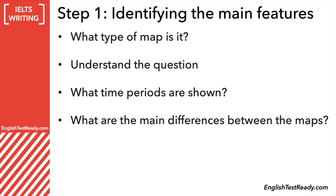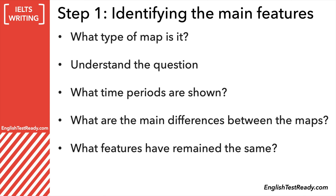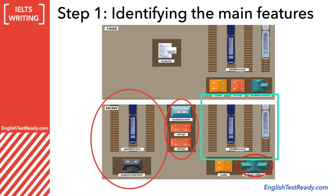Now we need to look at what are the main differences and similarities in the maps. You need to identify the main differences, and this will likely be the majority of your written answer. So let's take this map for example. There are three major differences: the platforms and supermarket on the left, the shops and restaurant in the middle, and the ticket office in the bottom right. To get a band 7 or above, you need to identify and write about all of these major differences. Also consider what features have remained the same — in this case, the main platforms in the top right have stayed the same and you should mention that.